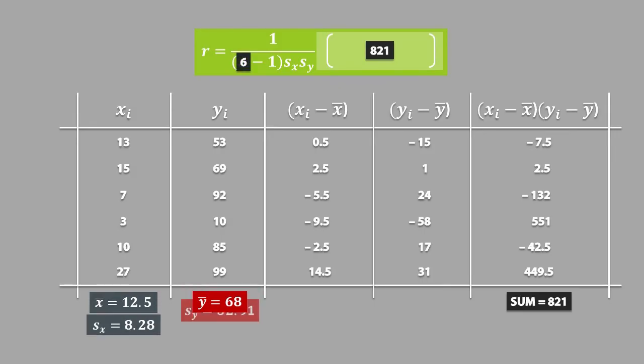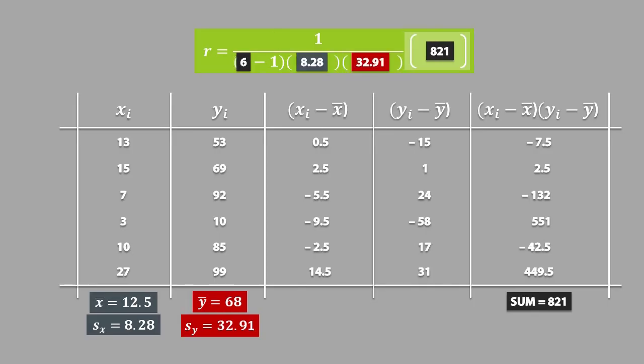Next, we need to calculate the standard deviations for each variable, and you should already know how to do this. At this point, we have all of the ingredients we need for the formula, so we can plug in Sx and Sy into the formula, and when we simplify this, we get our value of r, which is equal to 0.602.